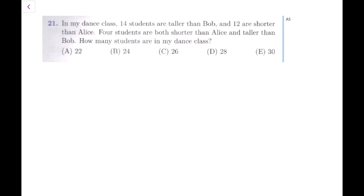Alright, let's start reading question number 21. In my dance class, 14 students are taller than Bob, and 12 are shorter than Alice. 4 students are both shorter than Alice and taller than Bob. How many students are in my dance class?